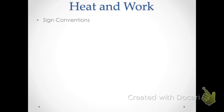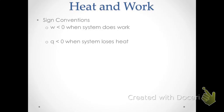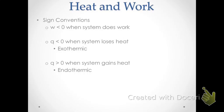When we talk about Q and W, we have sign conventions. Work is less than zero whenever the system does work, and greater than zero when work is done on the system. Q is less than zero when the system loses heat — that would be an exothermic process. Q is greater than zero when the system gains heat — that corresponds to an endothermic process.